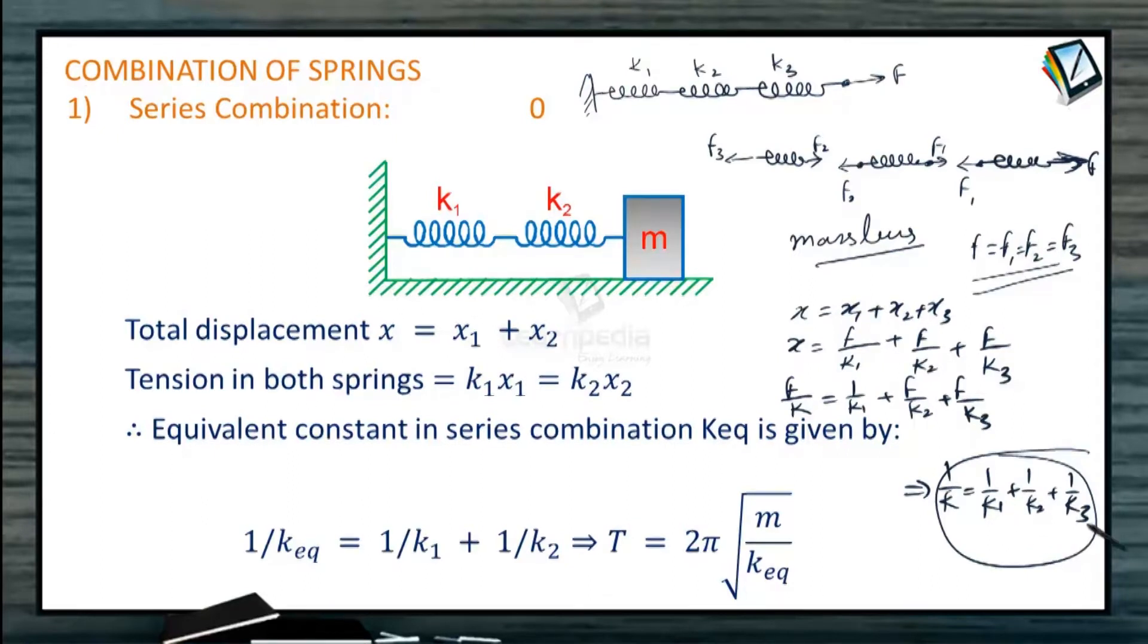Because the smallest K means that particular term inverse will be the biggest one. Then plus something and then inverse. So number will be even less than that by that particular number. So equivalent constant for series combination can be calculated using this particular formula.